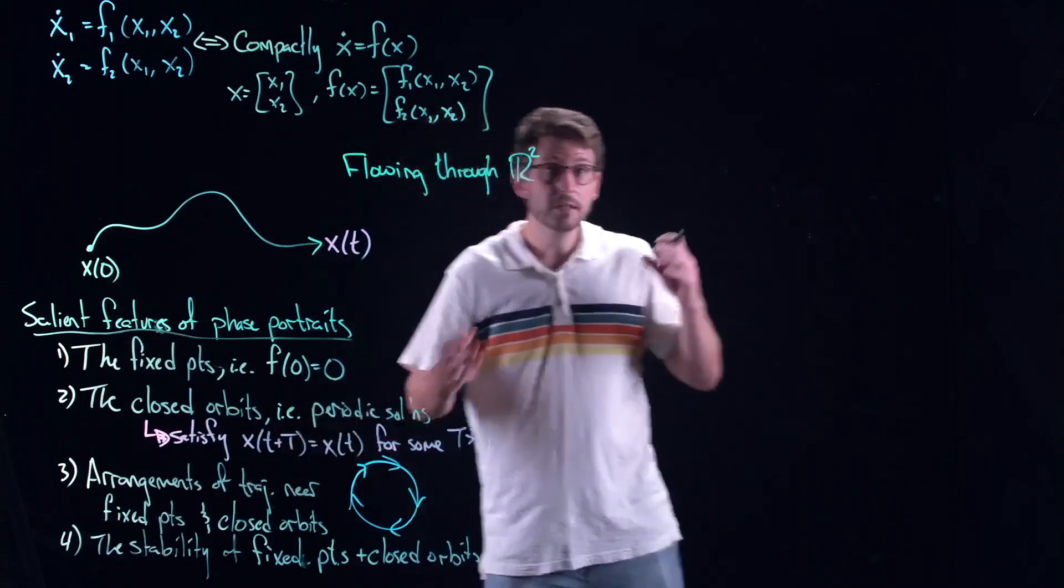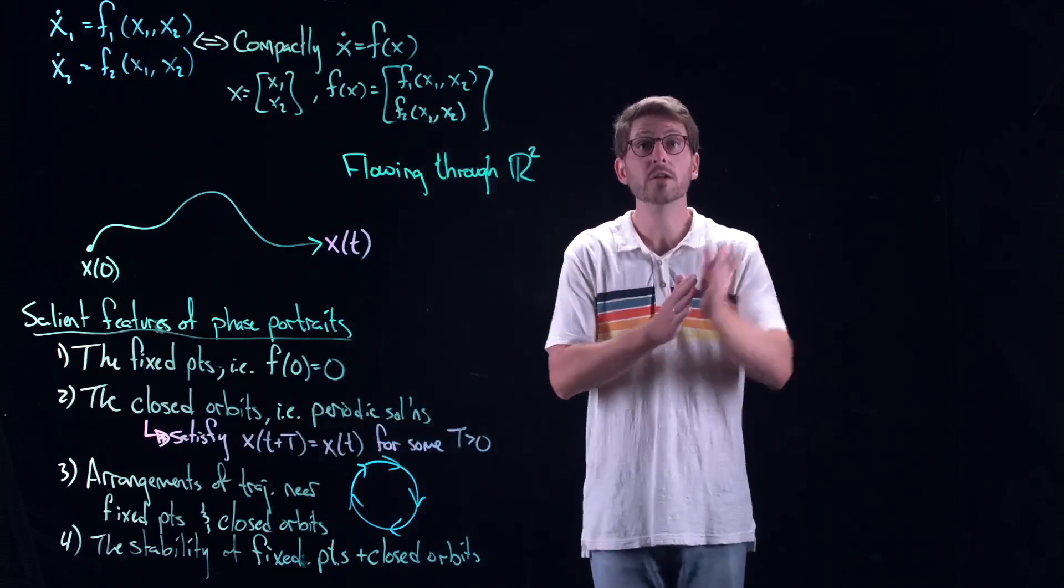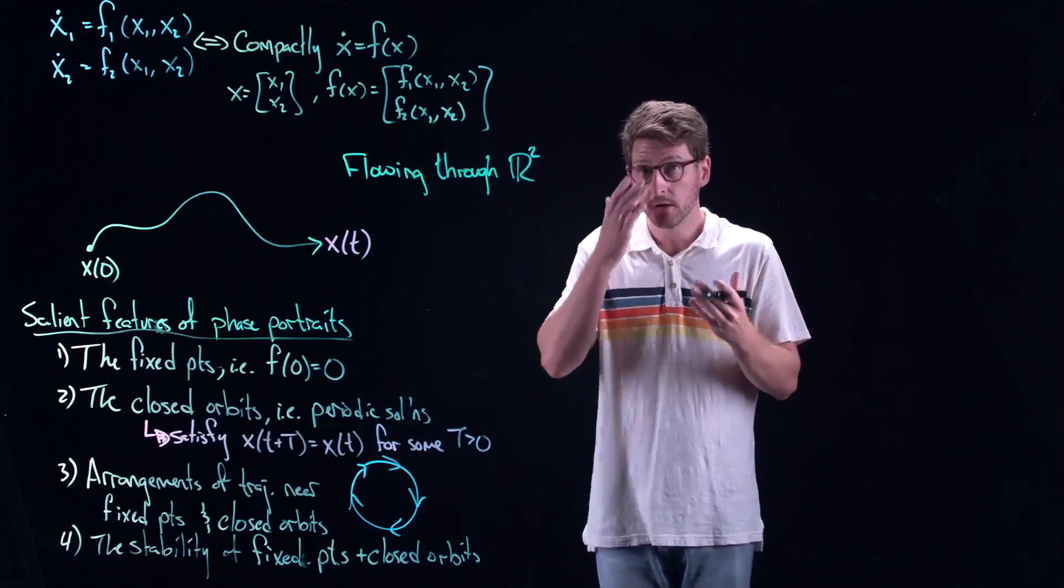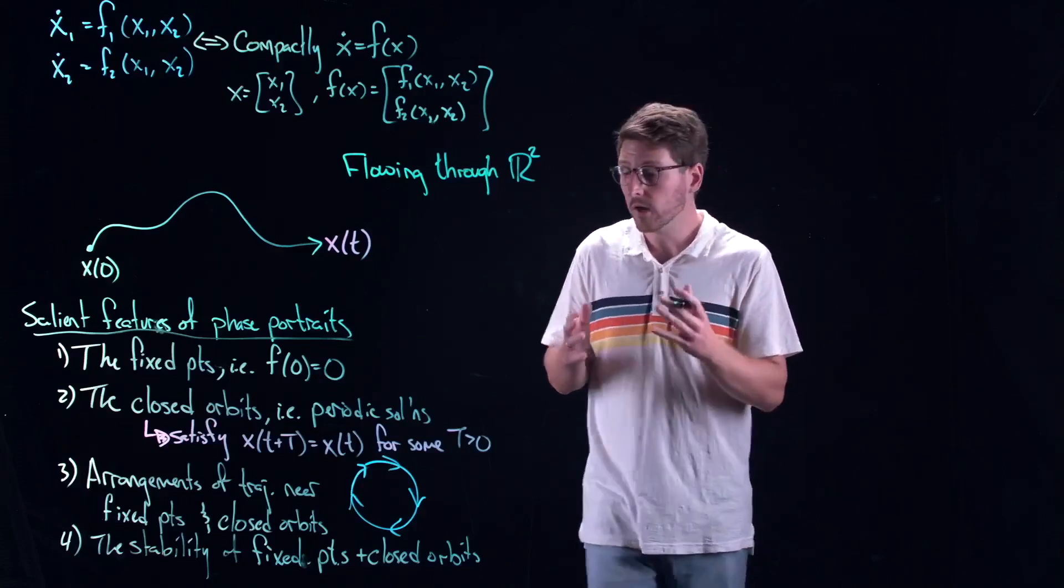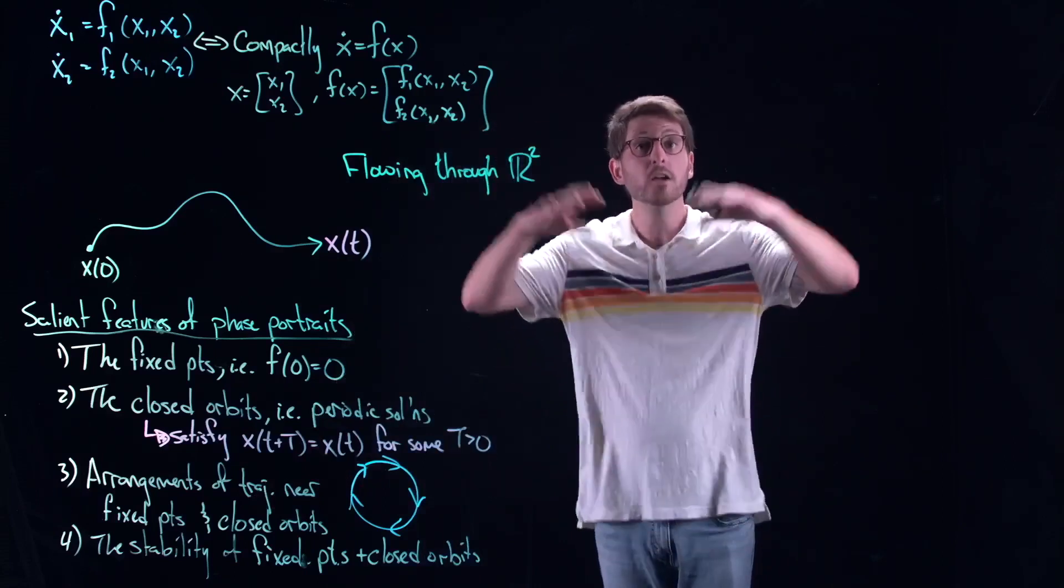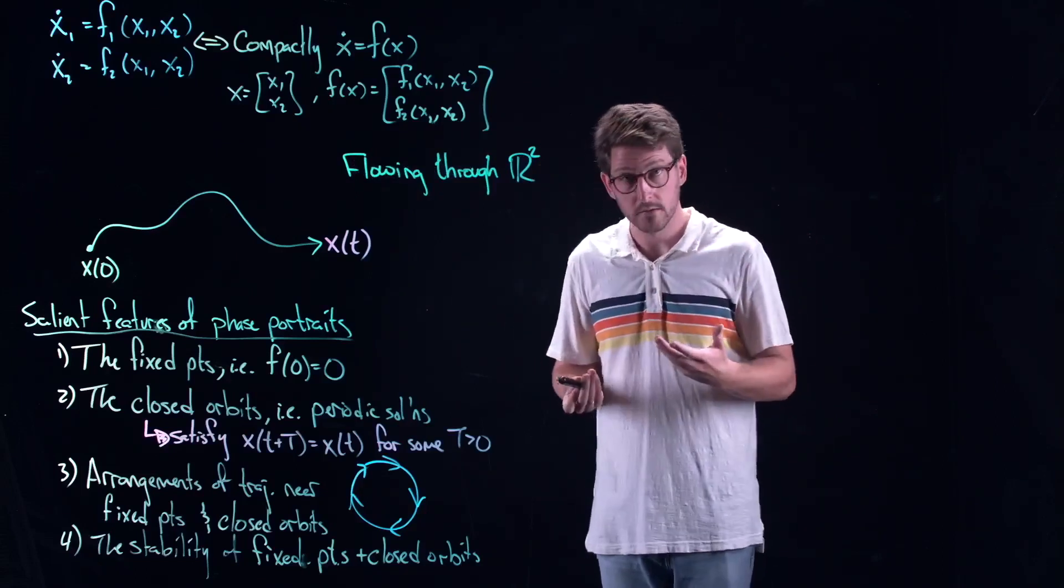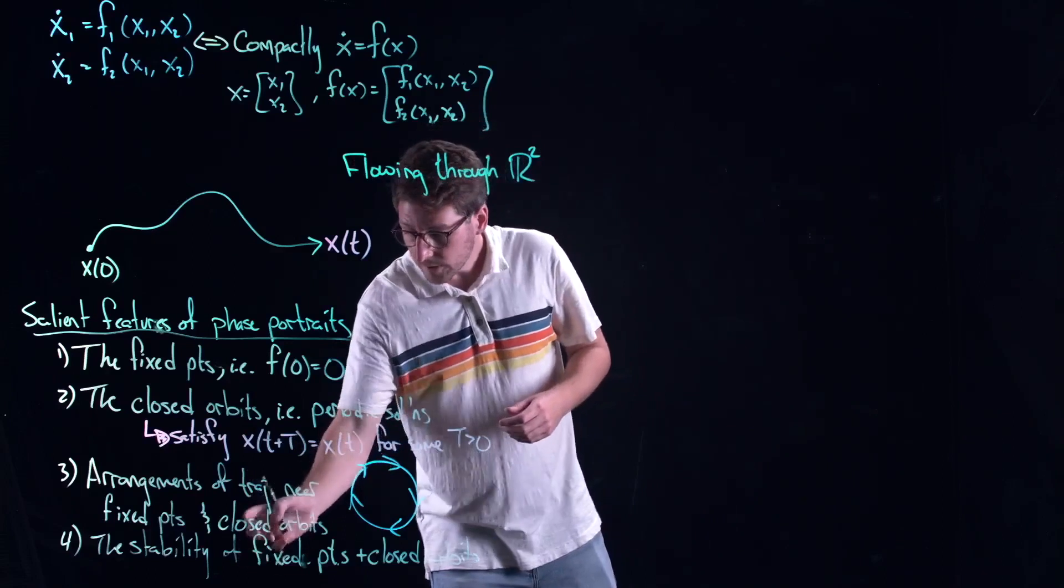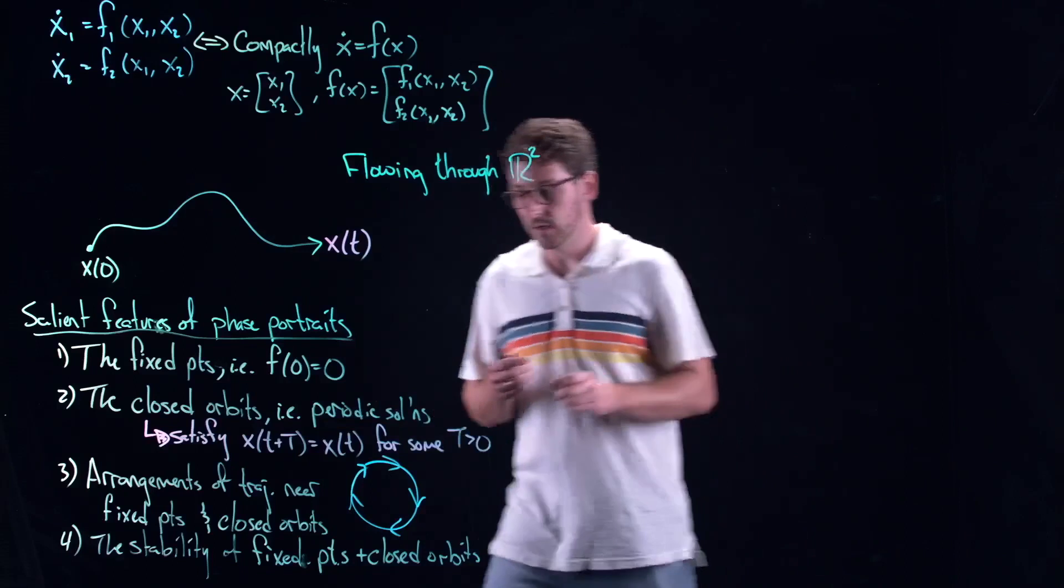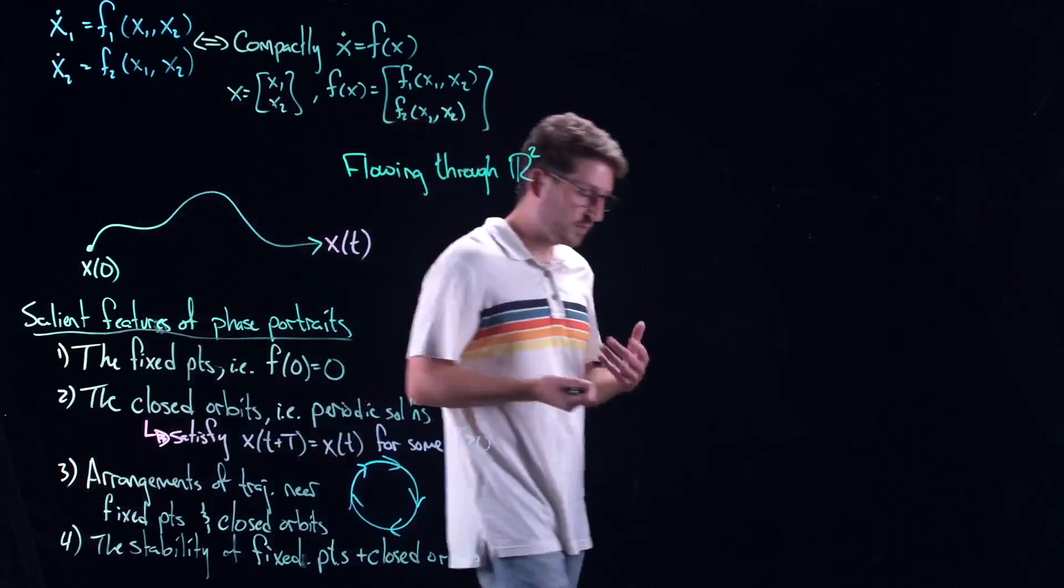Something we would also like to look at is the arrangement of trajectories near the fixed points and closed orbits. And the fourth thing here is going to be the stability. I want to differentiate between three and four. Number three is more geometrical, number four is more analytical, as we'll see in the next video.